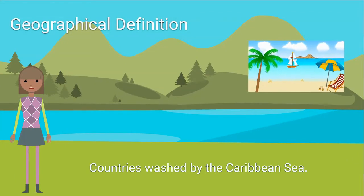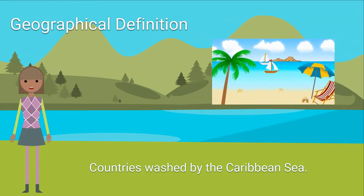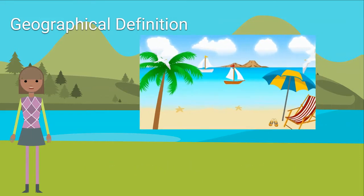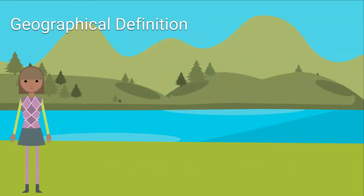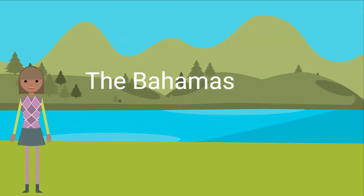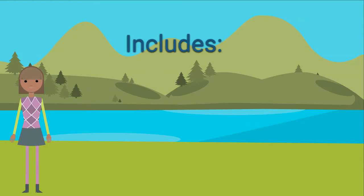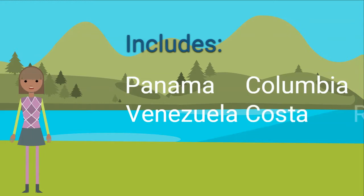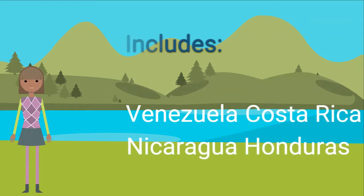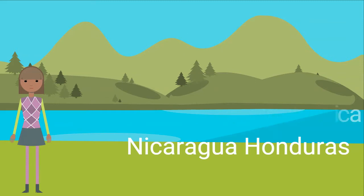The geographical definition refers to countries that have their coast being washed by the Caribbean Sea. However, it is not very inclusive because it excludes the archipelago of the Bahamas. Interestingly, this definition includes mainland territories such as Panama, Colombia, Venezuela, Costa Rica, Nicaragua, and Honduras that are not considered a part of the Caribbean. Therefore, this definition is not precise.